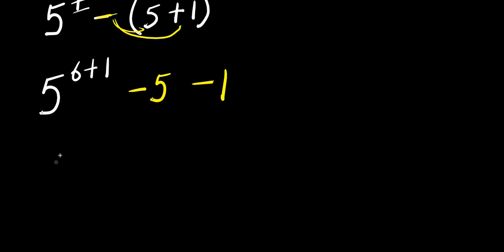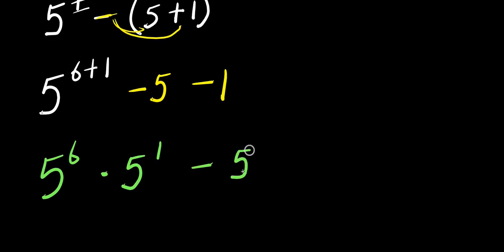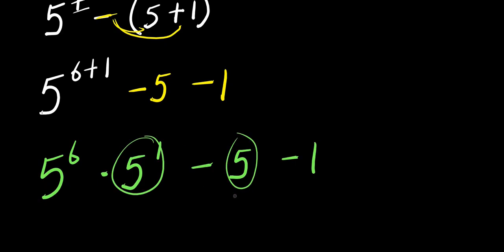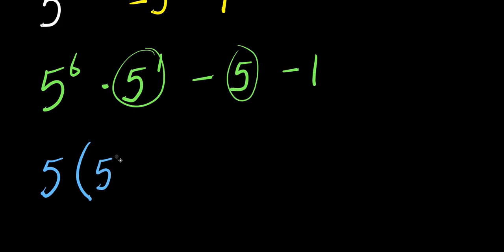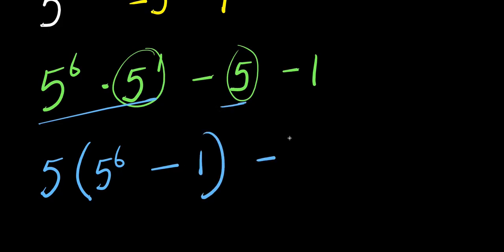That means I'm going to have 5 power 6 times 5 power 1, minus 5, minus 1. From here, 5 power 1 is the same thing as 5, so I can factor out 5 because it appears in two places. So we have 5 times — if you divide 5 power 6 by 5 you have 5 power 6 — minus 5 divided by 5 is 1, and there is also minus 1.